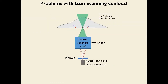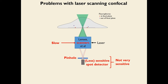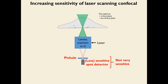Laser scanning confocal microscopy has significant limitations. First, by rejecting out-of-focus light before it reaches the detector and using detectors inherently less sensitive than cameras, the technique is not very sensitive. Second, because the laser must be scanned through the sample, it is much slower than parallel detection methods. Third, because high-powered lasers are used, confocal can be a very damaging technique.